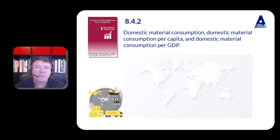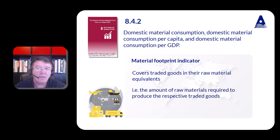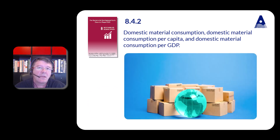To get a more complete picture of the actual material consumption, it is recommended to use a material footprint indicator that covers traded goods in their raw material equivalents — i.e., the amount of raw materials required to produce the respective traded goods. In 2019, the global material footprint was 95.9 billion tons, close to the global DMC for the same year.